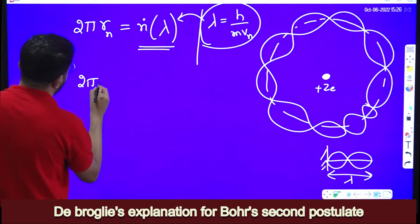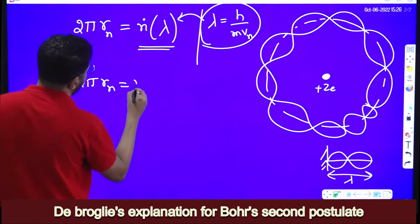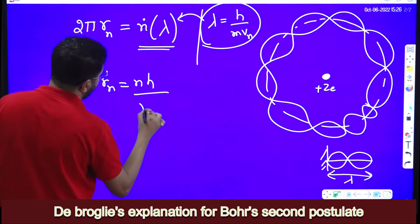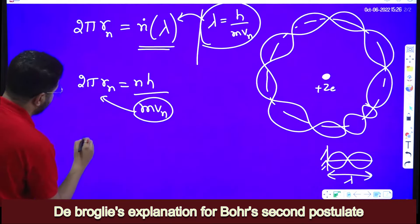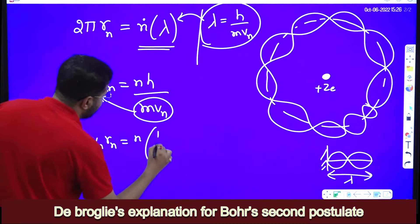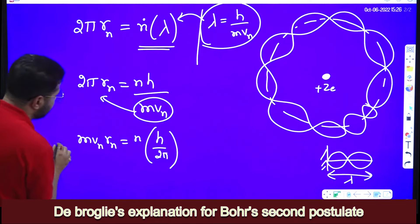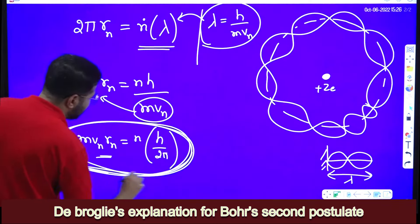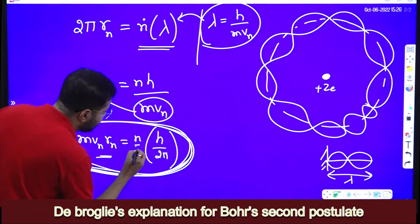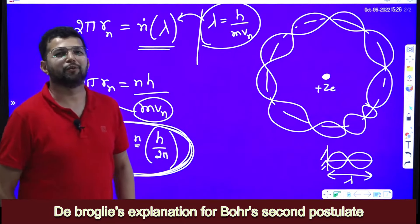Then what happens? 2πr_n is equal to n into h by mv_n. Now this mv_n comes here. So what happens? m into v_n into r_n is equal to n into h by 2π. So what is this mvr? mvr means angular momentum. Angular momentum of an electron revolving in the stationary orbit should be integral multiple of h by 2π.